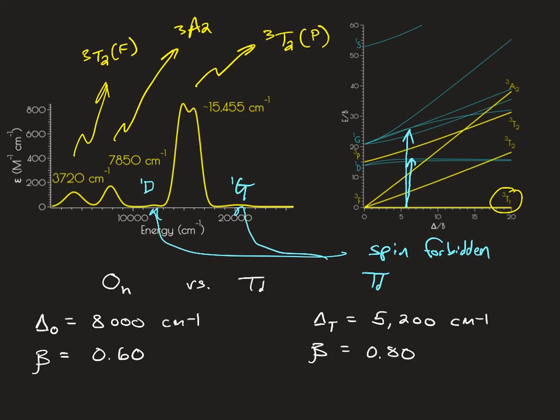So, as we predicted from crystal field theory, delta T is much less than delta O. In addition, what we're going to find is that OH compounds are going to be more covalent than corresponding TD compounds, which are more ionic, which is reflected in that beta parameter.